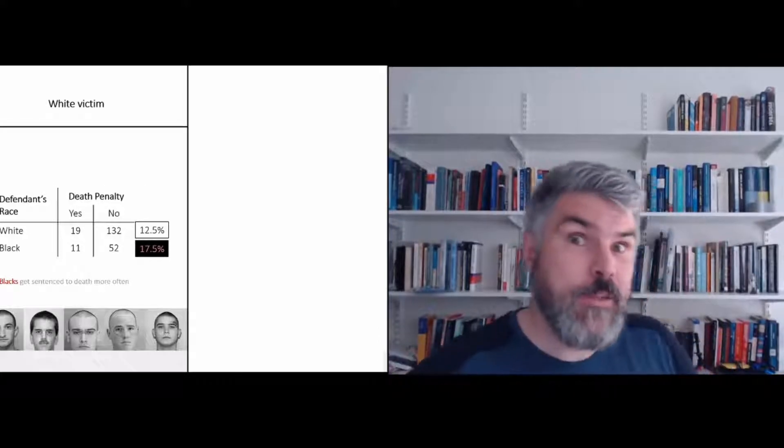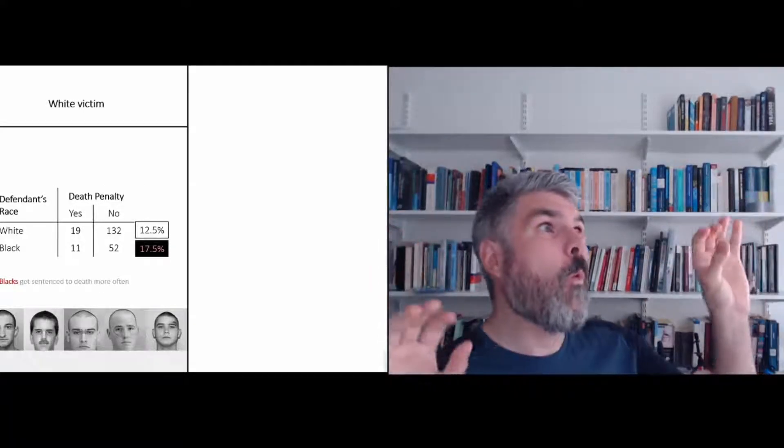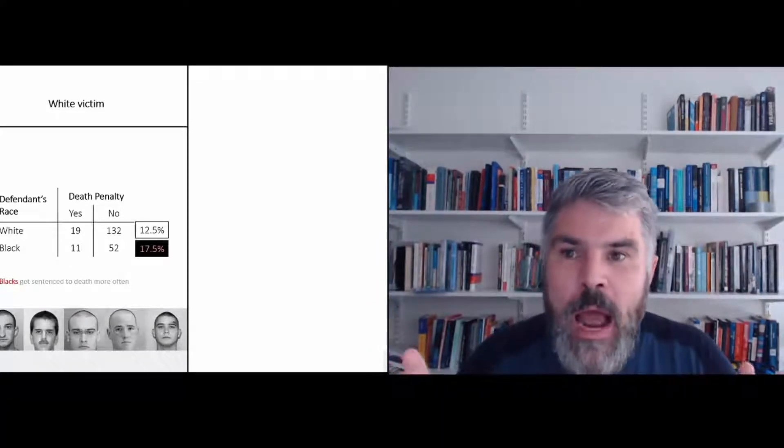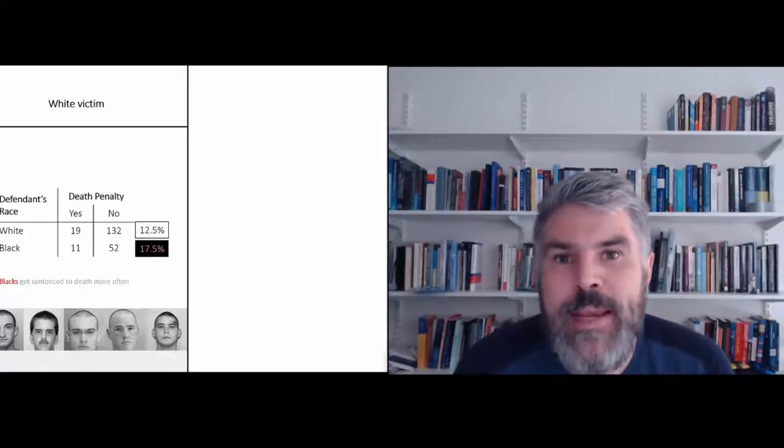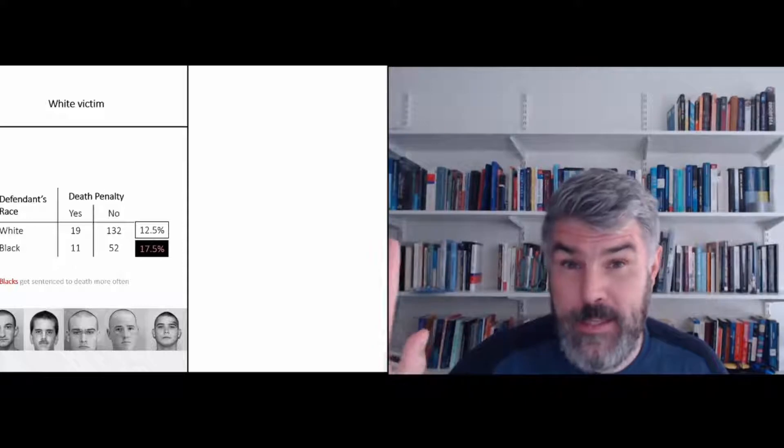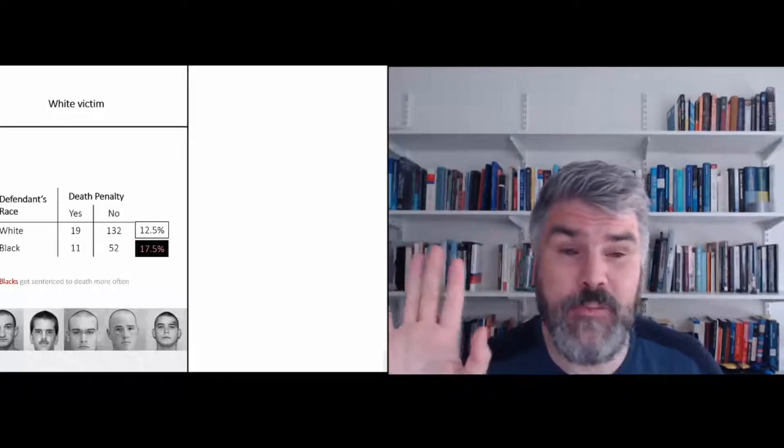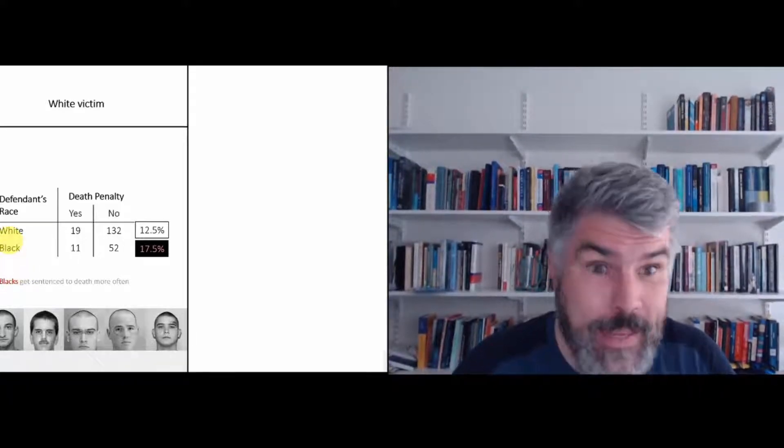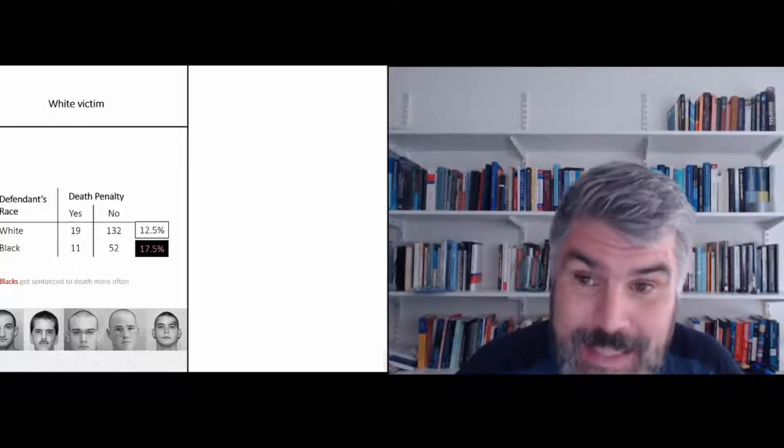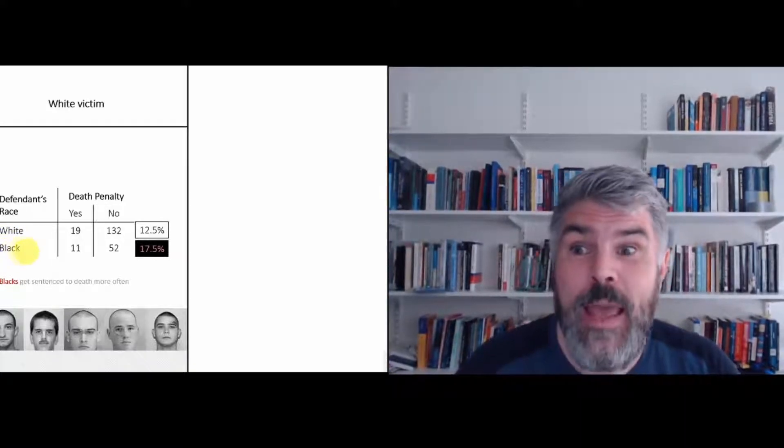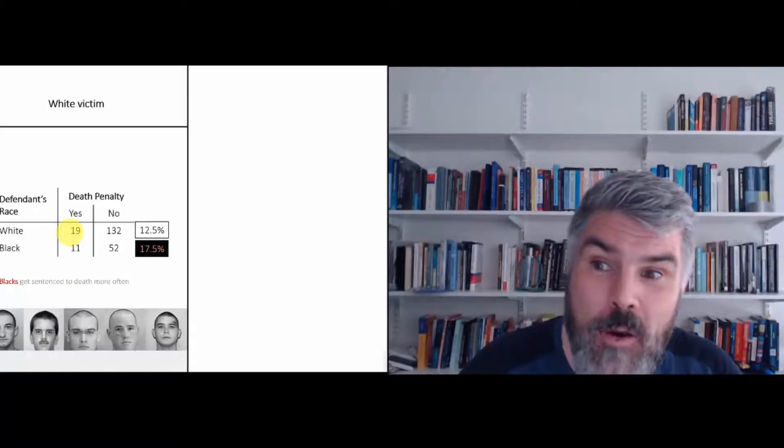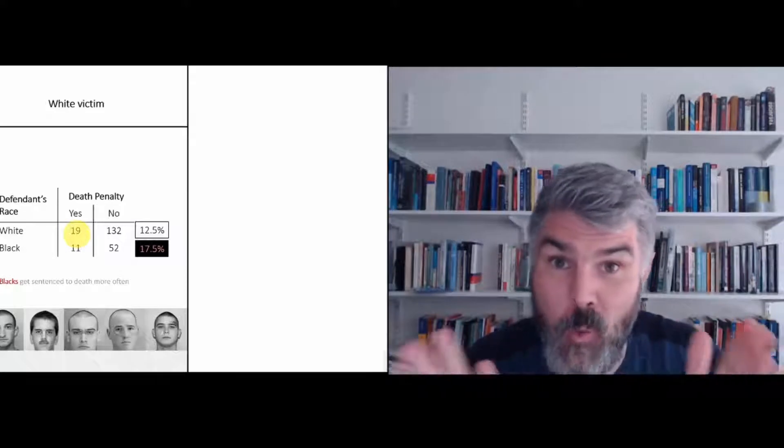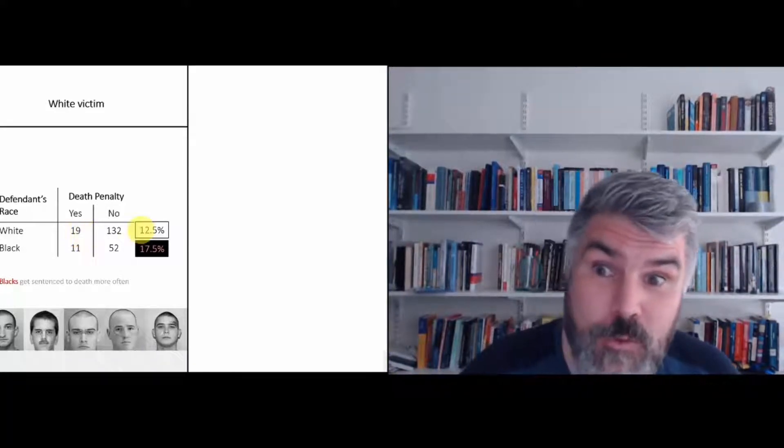Now let's do a bit of magic. Now I'm separating this information further out depending on what race the victim was. So now we're only looking at the cases where the person who got killed was white. And when we now calculate the rate of white offenders who get sentenced to death for having killed a white person, we end up with 12.5%.